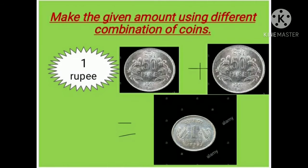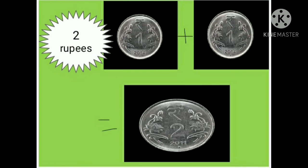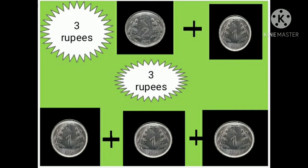Make the given amount using different combinations of coins. 50 paisa and 50 paisa makes 1 rupee. 1 rupee plus 1 rupee makes 2 rupees.